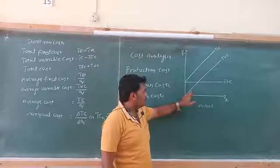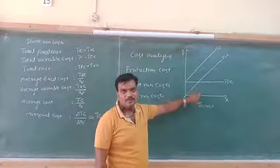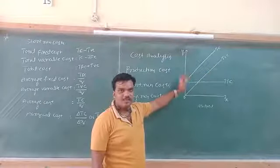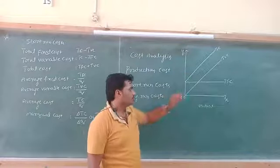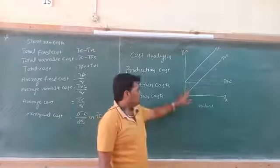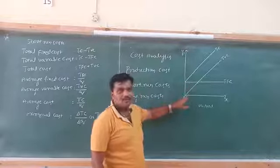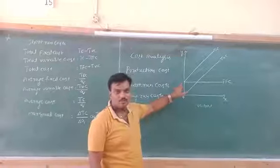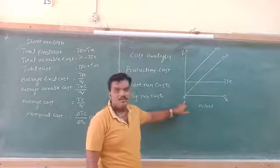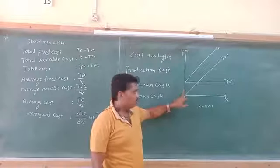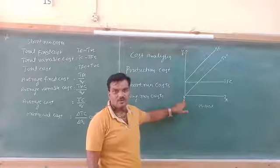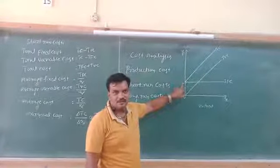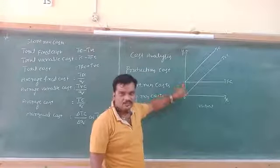As output increases, both TVC (Total Variable Cost) and TC (Total Cost) also increase. But the Total Cost curve is always above the Total Variable Cost curve. One important observation is that the TVC curve originates from zero, but TC does not originate from zero. Because when output is zero, there will still be some fixed cost. When output is zero, TVC is zero, but there is still some fixed cost — that is why TC starts above zero.